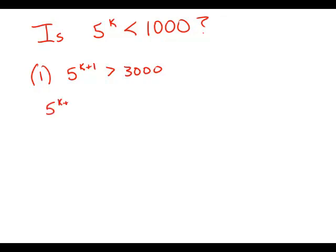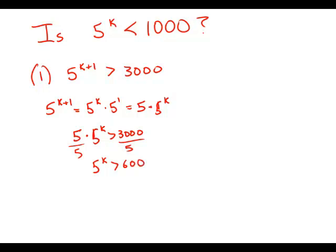We know that 5 to the k plus 1, by the laws of exponents, that's 5 to the k times 5 to the 1, so that's 5 times 5 to the k. So we know that 5 times 5 to the k is greater than 3,000. So if we divide both sides by 5, what we get is that 5 to the k is greater than 600.